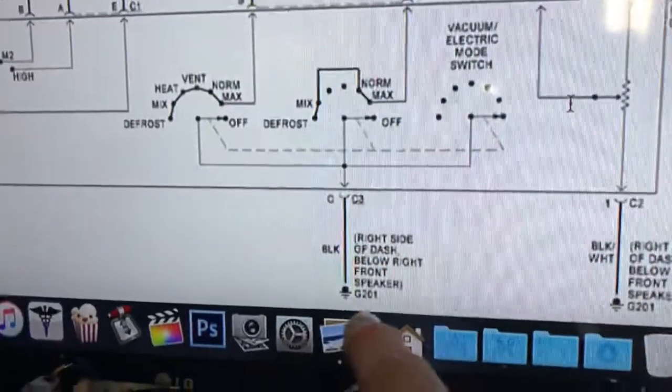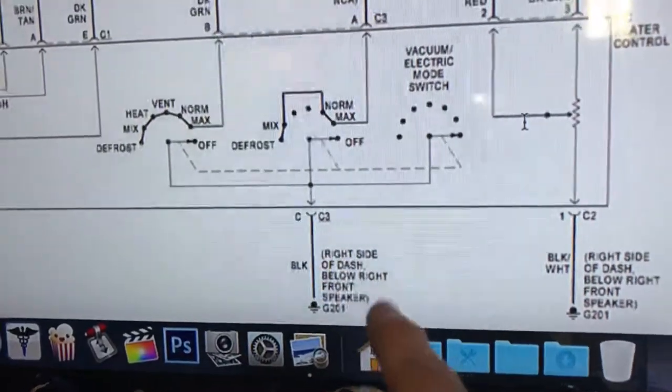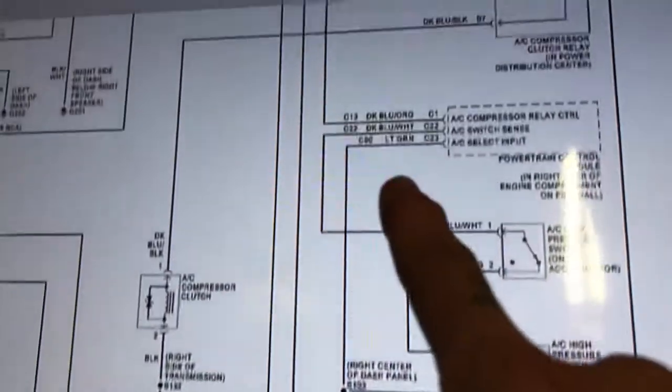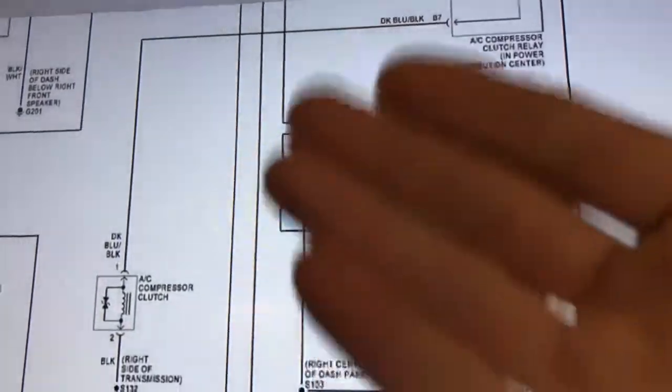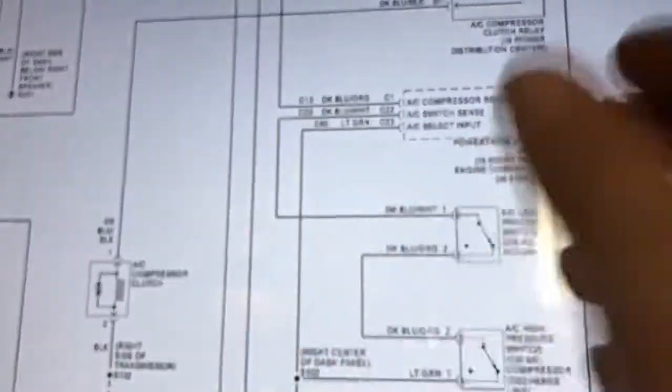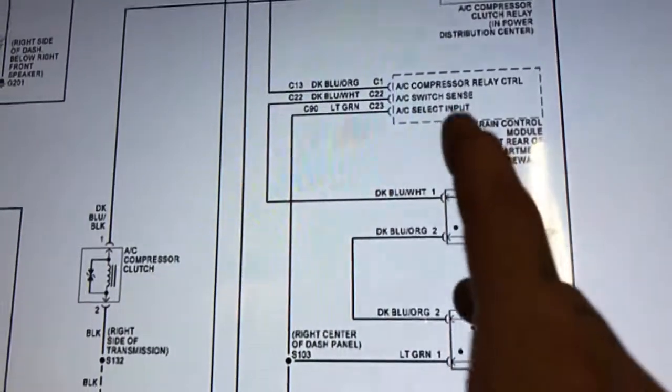That switch then grounds it. Therefore, if that sees ground and then that sees ground, then the AC will kick on, the idle will rise, everything will work like it's supposed to.